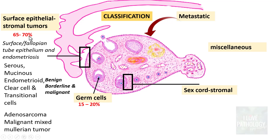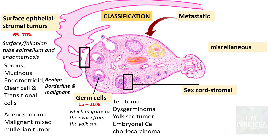Germ cell tumors account for around 15 to 20% of all ovarian tumors. Germ cells are those which migrate to the ovary from the yolk sac. Types include teratoma — which can be benign or immature (malignant) — dysgerminoma, yolk sac tumor, embryonal carcinoma, and choriocarcinoma.